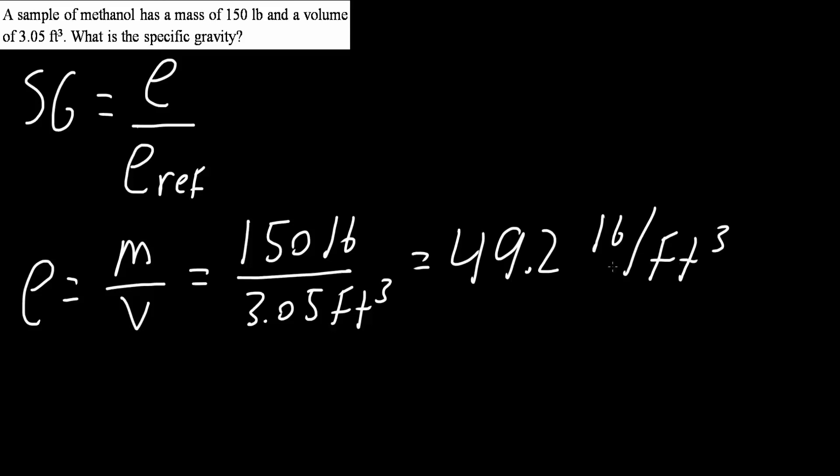Now we have density. Now it should be simple. We can say specific gravity is equal to density, which was 49.2 pounds divided by feet cubed, divided by density of the reference, which is water, which is something that we need to memorize, which is 62.43 pounds divided by feet cubed.